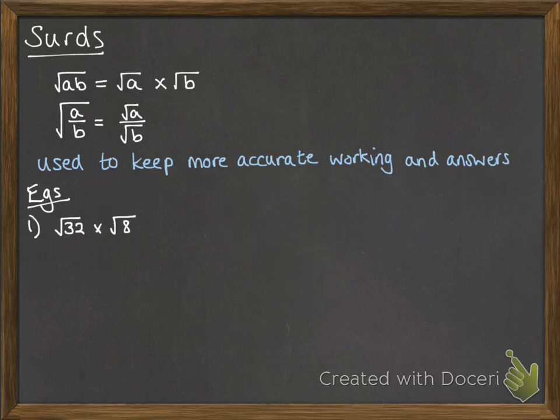So the square root of 32 times the square root of 8. That's the same as if we do the square root of 32 times 8, which is the square root of 256, and that is 16.